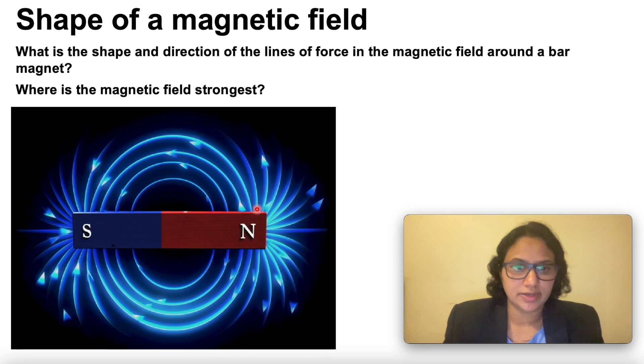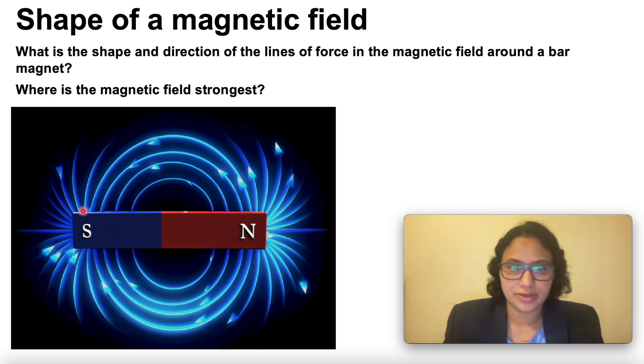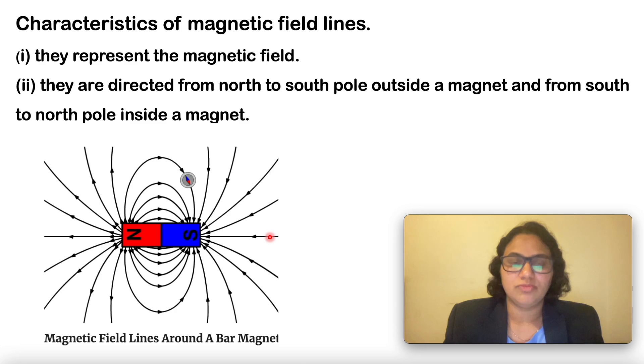What are the characteristics of magnetic field lines? They represent the magnetic field. They are directed from the north pole to the south pole outside the magnet, but inside the magnet it is from the south pole to the north pole. The field lines are closed curves.